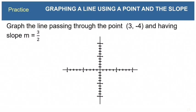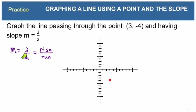Let's try another: graph the line through (3, negative 4) with slope m equals positive three-halves. Place a point at (3, negative 4). Using slope as rise over run, rise 3 and run 2 from that point to find the next point. Connect those two points with a line, and that's all there is to it.